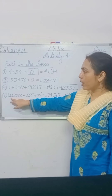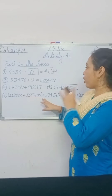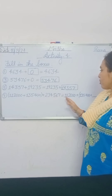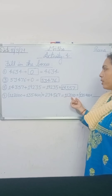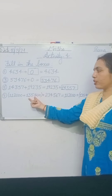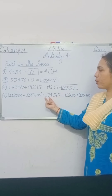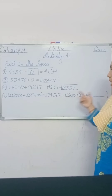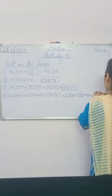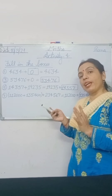Question 7 is: 11,000 plus 1,12,000 plus 1,35,400, and the third number is 2,34,567, given in addition form. On the right side you have 1,12,000, and on the left side also 1,12,000. Right side has 1,35,400 and left side also 1,35,400. On the right side you have a dash and on the left side you have 2,34,567. By the grouping property of addition, you write 2,34,567.